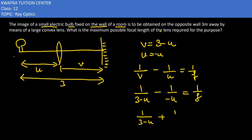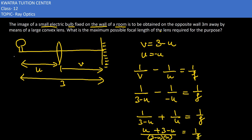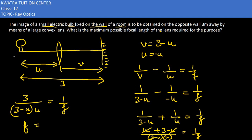So it becomes 1/(3 minus u) plus 1/u equals 1/f. Taking the LCM, u cancels to give 3 in the numerator, and the denominator is (3 minus u) times u. So f equals (3 minus u) times u over 3.